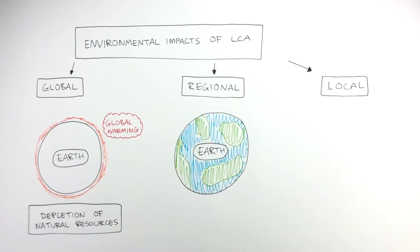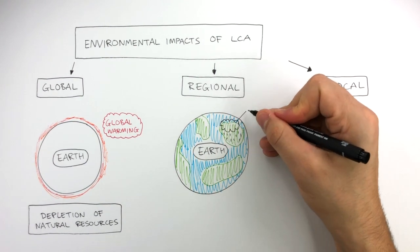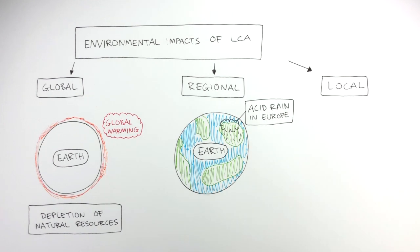Regional environmental impacts affect large areas on earth. For example, acid rain in Europe. Europe is a large area.